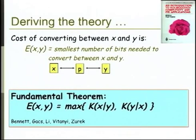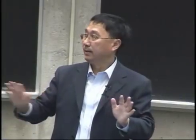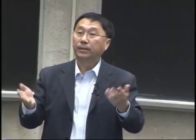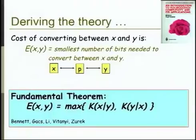From that definition, I can prove a fundamental theorem: the energy needed to convert between x and y is precisely max(K(x|y), K(y|x)) — take the larger of the two conditional complexities. Here K is simply compression: the optimal compression of x given y for free, or y given x for free. Whichever is larger, that's the amount of energy needed to convert between x and y — and this is mathematically proved.